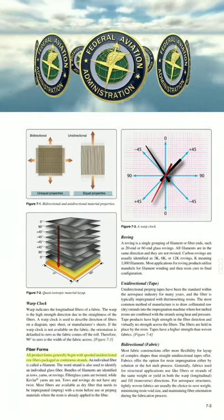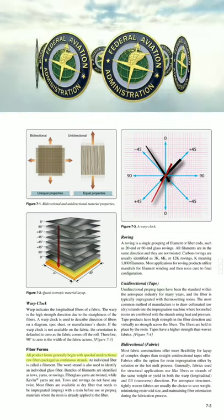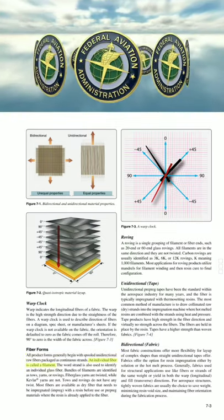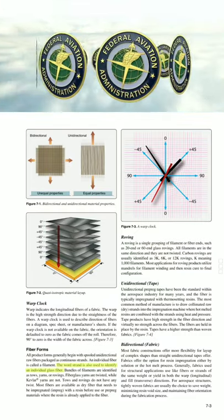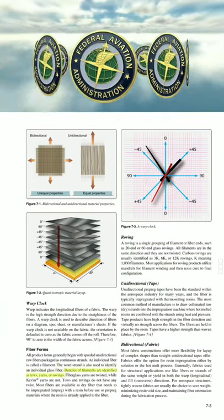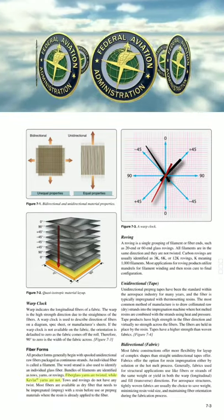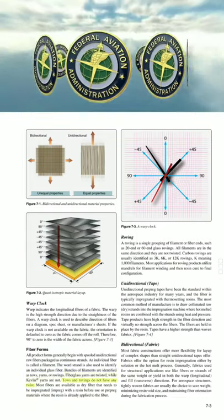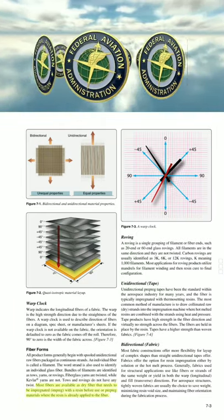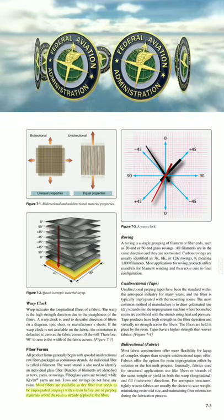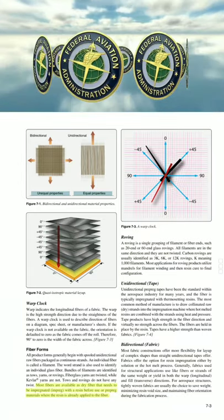Fiber forms. All product forms generally begin with spooled unidirectional raw fibers packaged as continuous strands. An individual fiber is called a filament. The word strand is also used to identify an individual glass fiber. Bundles of filaments are identified as tows, yarns, or rovings. Fiberglass yarns are twisted, while Kevlar yarns are not. Tows and rovings do not have any twist. Most fibers are available as dry fiber that needs to be impregnated with resin before use, or as prepreg materials where the resin is already applied to the fiber.